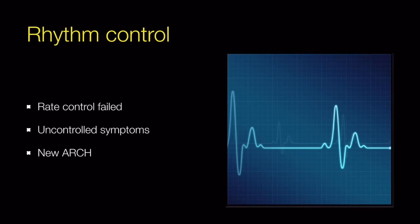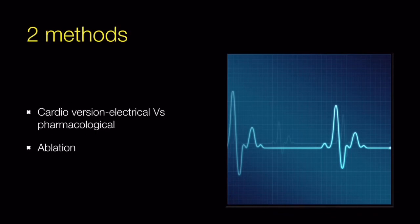Coming to rhythm control strategy — the third R in this 3R approach. Rhythm control is preferred when rate control has failed, when patients still have symptoms despite rate control, or in the new-onset cases described earlier. For rhythm control, there are two methods: cardioversion and ablation. Cardioversion itself has two approaches — electrical cardioversion and pharmacological cardioversion.